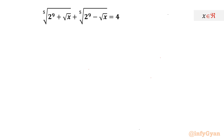Welcome back to Infigyan, my dear friends. In this video we are going to take up one very interesting and challenging radical equation problem. It is the 5th root of 2 raised to the power 9 plus square root x, plus the 5th root of 2 raised to the power 9 minus square root x, equal to 4.